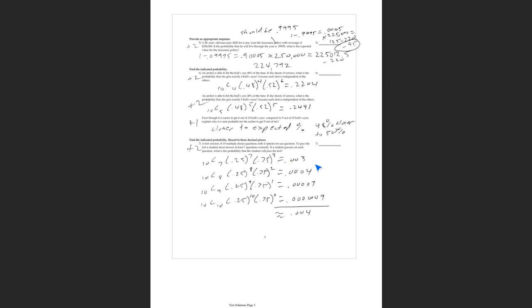The probability of getting exactly seven out of ten right by guessing is only three-tenths of one percent — not very good. Getting exactly eight is even less probable, exactly nine even less, and getting all ten just by guessing is minuscule — something like 0.000006. But if you add all those up you get about four-tenths of one percent. Since this is 'this or this or this,' when we hear 'or' we add — that's how we get the final probability.